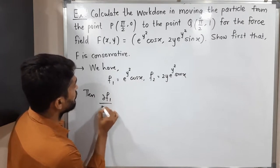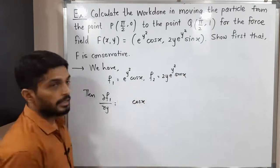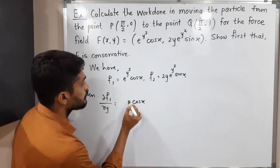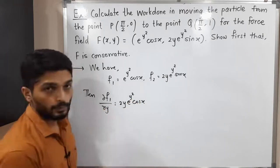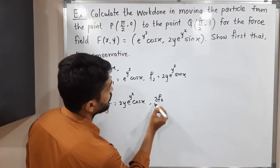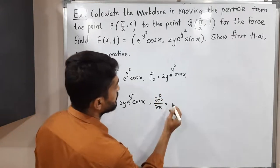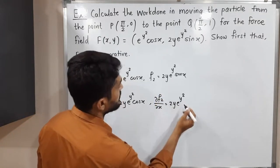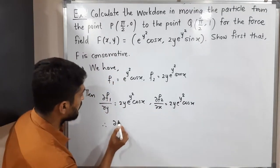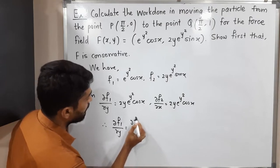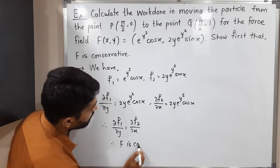The first component is e^(Y²)·cosX and the second component is 2Y·e^(Y²)·sinX. We take the derivative of F1 with respect to Y and the derivative of F2 with respect to X. If both are the same, the field is conservative. ∂F1/∂Y: cosX is constant, derivative of e^(Y²) is e^(Y²)·2Y by chain rule. ∂F2/∂X: 2Y·e^(Y²) is constant, derivative of sinX is cosX. Both are equal, so the field is conservative.